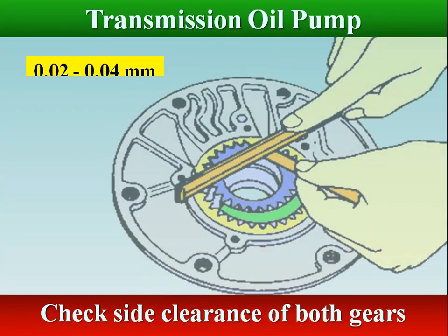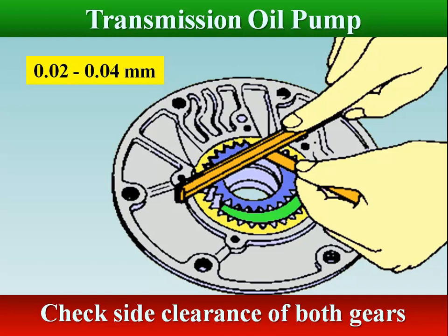Check the side clearance of both gears. Place a straight edge across the pump housing and the drive and driven gear. Measure the clearance between the straight edge and each gear using a feeler gauge. If the clearance is greater than the maximum specification, the gears should be replaced.